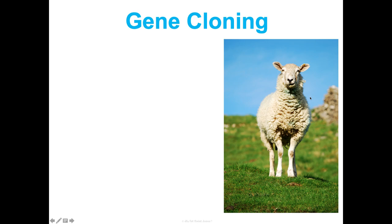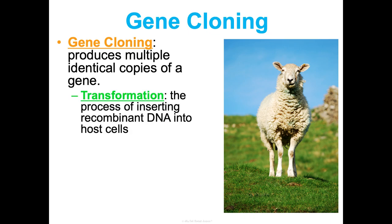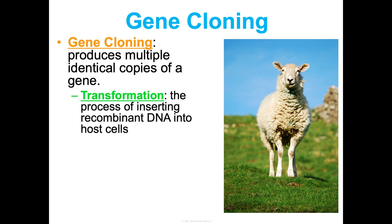Cloning — the very first cloned organism was a sheep named Dolly. Gene cloning is producing multiple identical copies of a gene, and this is possible because of transformation, which is the process of inserting recombinant DNA into host cells that then replicate over and over. We can insert recombinant DNA into bacteria plasmids, and when that bacteria reproduces — which it does very frequently — it makes millions of cells all with that cloned gene. It's important to note that gene cloning is not necessarily an entire organism.